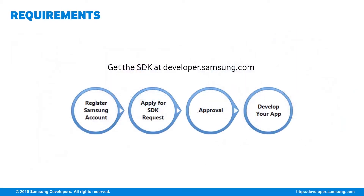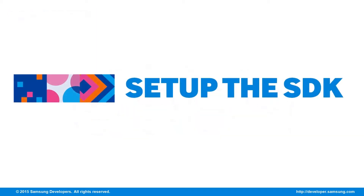Once you have a device that meets the requirements, it's time to get the SDK. You'll need to register with a Samsung account, fill up a form, and apply for an SDK request. It may take a week to get your approval. Once you get the SDK, you can get to developing your app.